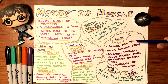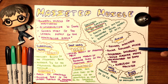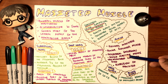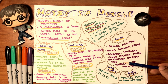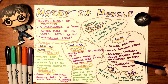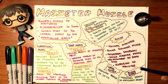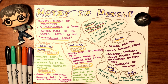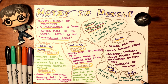The masseter elevates the mandible — it lets you close your mouth — and is a powerful elevator. It also performs unilateral excursion and retrusion of the mandible. Its nerve supply is the masseteric branch of the mandibular division of the trigeminal nerve, and its blood supply is the masseteric branch of the maxillary artery.